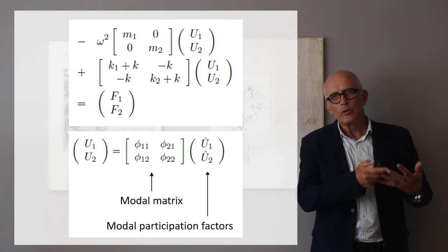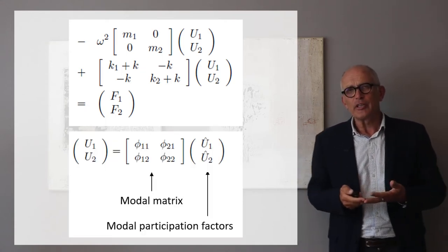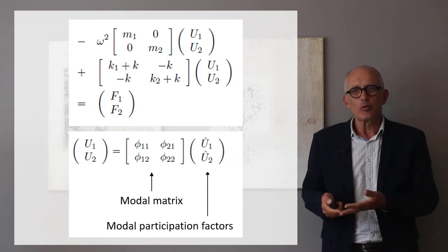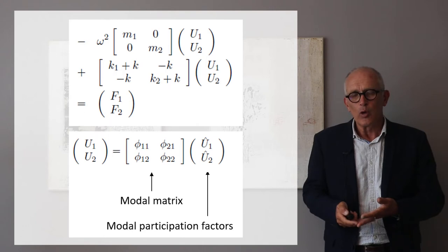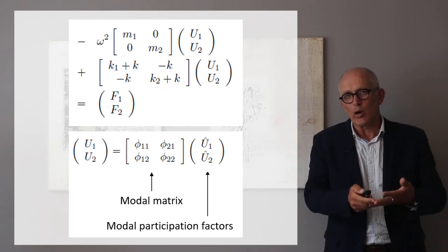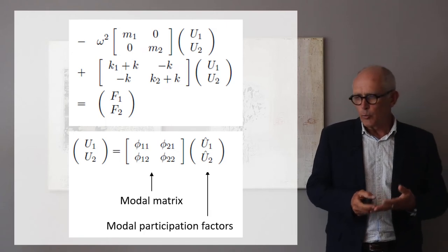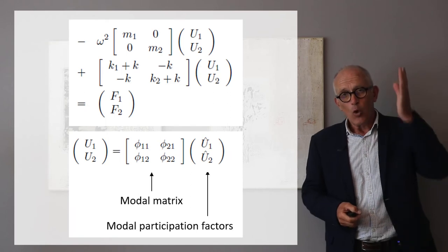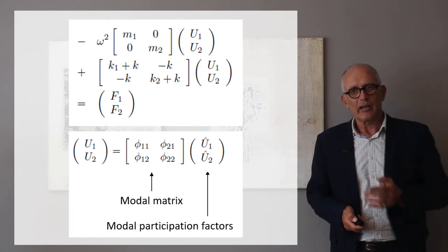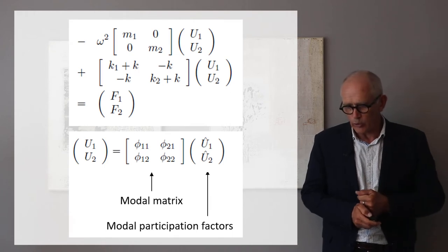If we can express the displacement vector u1 u2 as a linear combination of the individual modes that I called phi 1 and phi 2, and we have components phi 1 1, phi 1 2, phi 2 1 and phi 2 2. So the matrix that I call here the modal matrix is just a matrix in which I have placed one mode in every column. First mode, first column, second mode, second column.